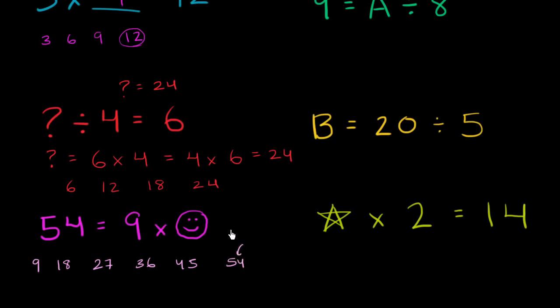This is 54 is 9 times 6. 9 times 6 is equal to 54. So we now know that the smiley face must be equal to 6. If we replace the smiley face with a 6, then this equation is true. 54 is equal to 9 times 6.